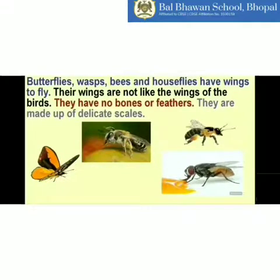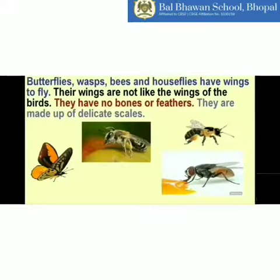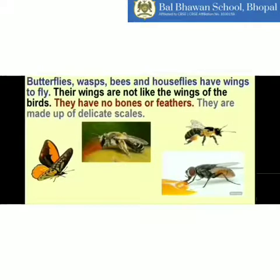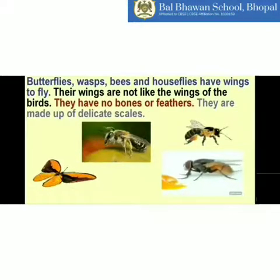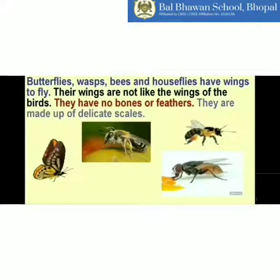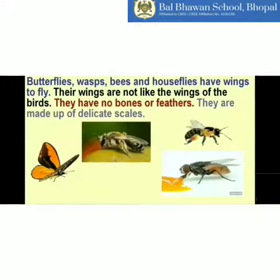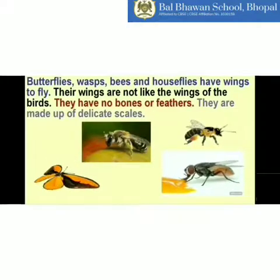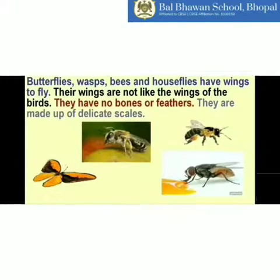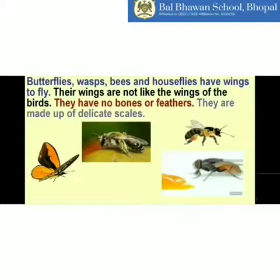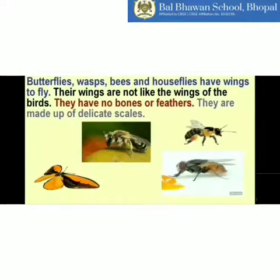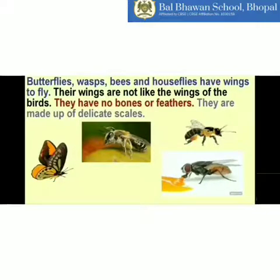The body of an insect has three parts: head, thorax, and abdomen. The wings are attached to the abdomen. These wings are very light and made of scales. With these wings, insects fly from one place to another to find food.